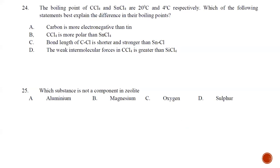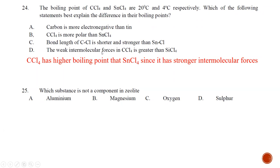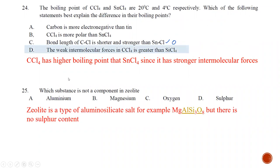Question number twenty-four: the boiling points of CCl4 and SnCl4 are given. Which statement best explains the difference in boiling points? Statement A — carbon is more electronegative than tin — is correct but does not explain why CCl4 has a higher boiling point. Statement B — is incorrect because both are non-polar molecules. Statement C — the C–Cl bond is shorter and stronger — is correct but does not explain boiling point differences, as boiling point depends on intermolecular forces, not covalent bond strength. Statement D — van der Waals forces in CCl4 are greater than in SnCl4 — is true and is the reason why CCl4 has a higher boiling point.